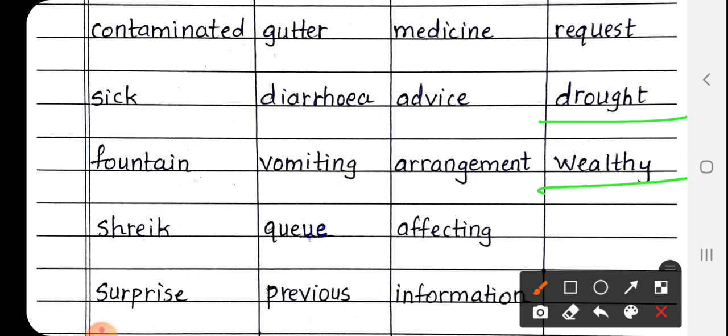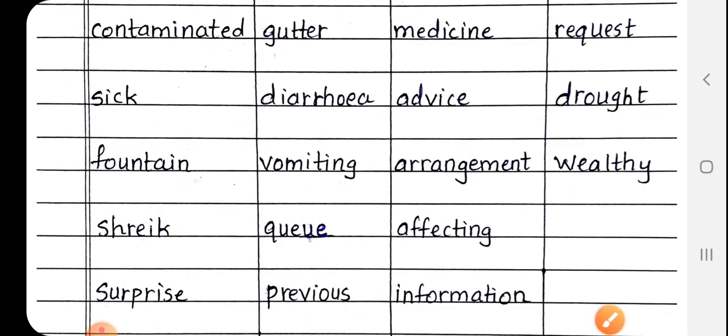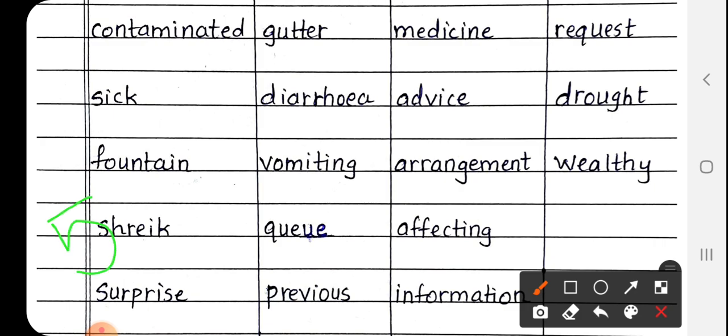So students, yahan par hamare chapter number 18 Water from Different Places ke sare hard words finish ho rahe hai. So students, yeh sare hard words aap logon ko EVS ki notebook mein five times likhne hai aur usse learn karna hai. Okay students. Write this all the hard words five times in your EVS notebook and learn also. Bye bye students. Thank you.